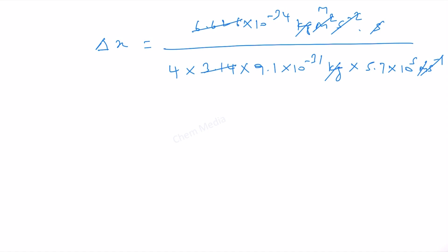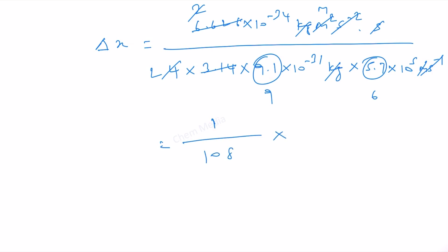Let us approximately take these values. 6.626 is approximately 1, and 4 times pi is approximately 2 times 2 equals 4, giving us 2 in the denominator. Taking 9.1 as approximately 9 and 5.7 as approximately 6, we get 9 times 6 equals 54, and 54 times 2 equals 108. For the powers of 10: 10 to the power minus 34 in the numerator, with 10 to the power minus 31 in the denominator becomes 10 to the power minus 3. We also have 10 to the power 5 in the denominator, which becomes 10 to the power minus 5. So we get 10 to the power minus 8 meter.